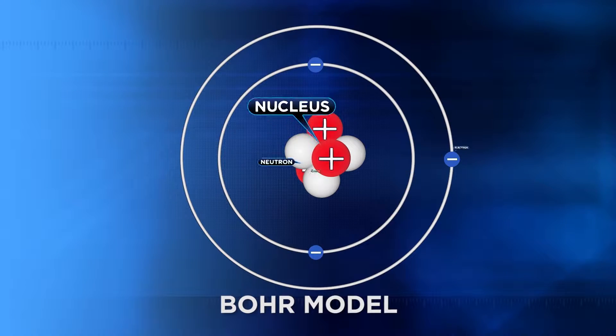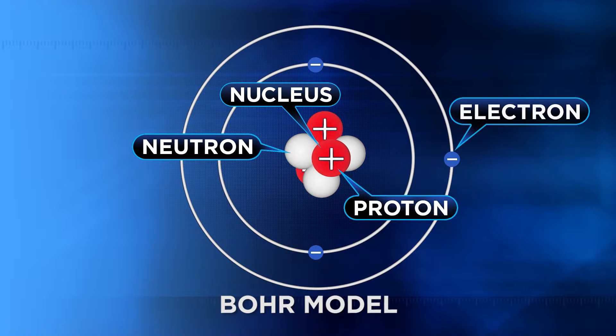In Unit 3, we also explored the primary components of the atom — the protons and neutrons in the nucleus, as well as the tiny, negatively charged electrons moving around the nucleus in areas called energy levels.